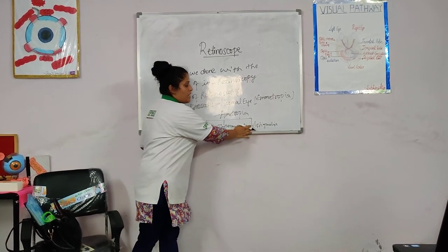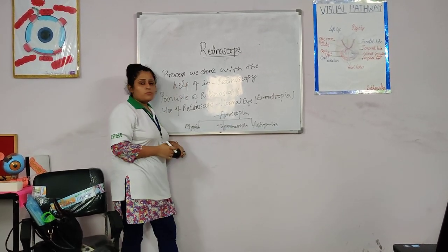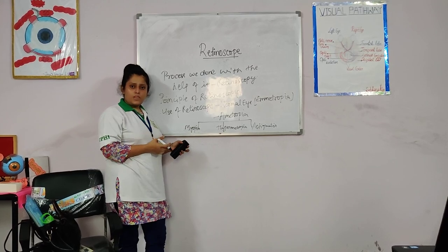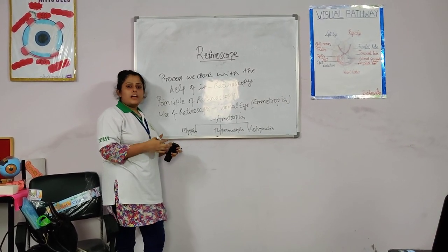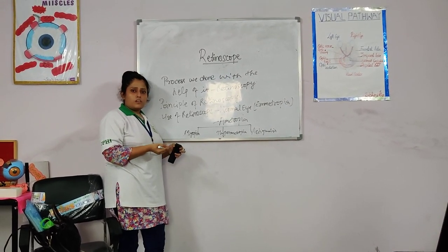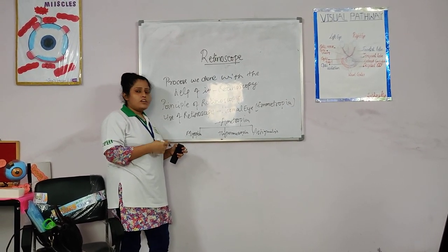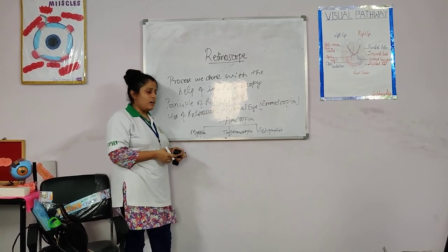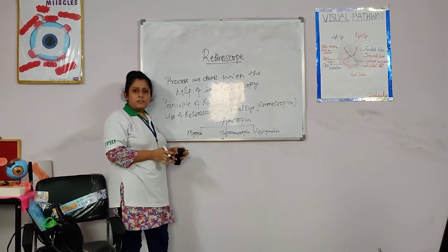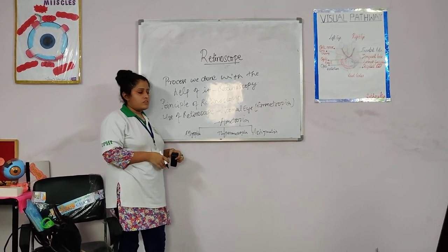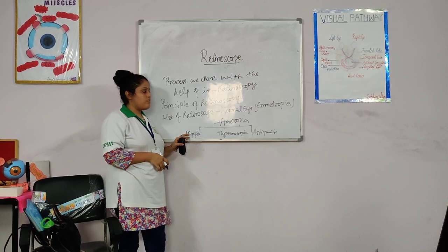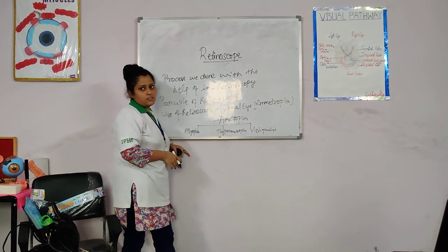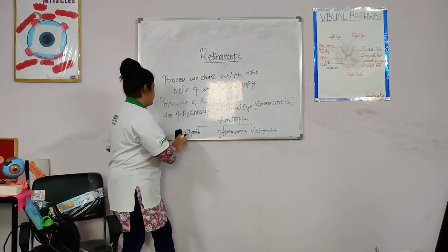If we are talking about astigmatism, when the parallel rays of light come from infinity, the image focuses neither in front of the retina nor behind it, but forms multiple focal points when accommodation is at rest.